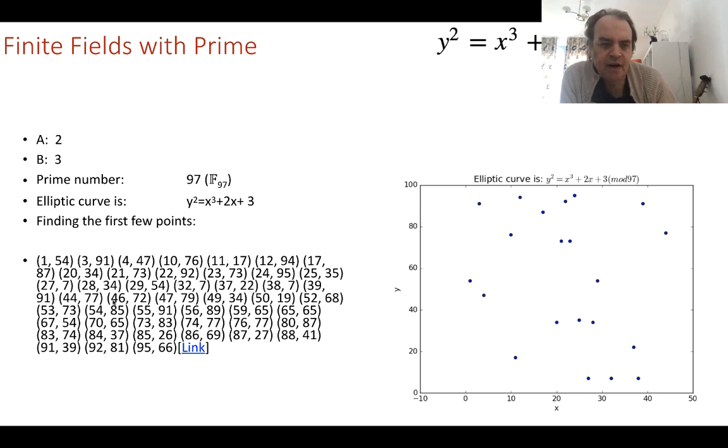Only certain values will work on the curve within our finite field. So here we see one, 54, and then we have 391 and so on. So those are all the points that we have.